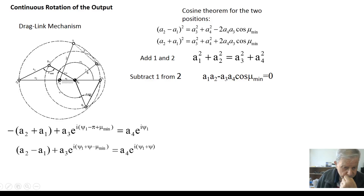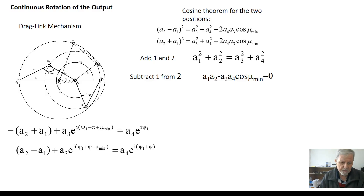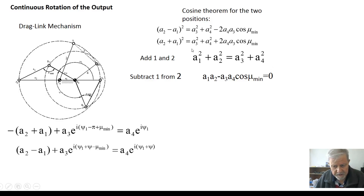Setting both minimum transmission angle values equal at the two extremes gives the best transmission angle condition. Adding the two resulting equations, the cross terms cancel, giving: a1 squared plus a2 squared equals a3 squared plus a4 squared. This is the condition for the centric case — the same result as before. Subtracting the two equations gives: (a1 minus a2) minus (a3 minus a4) equals zero.